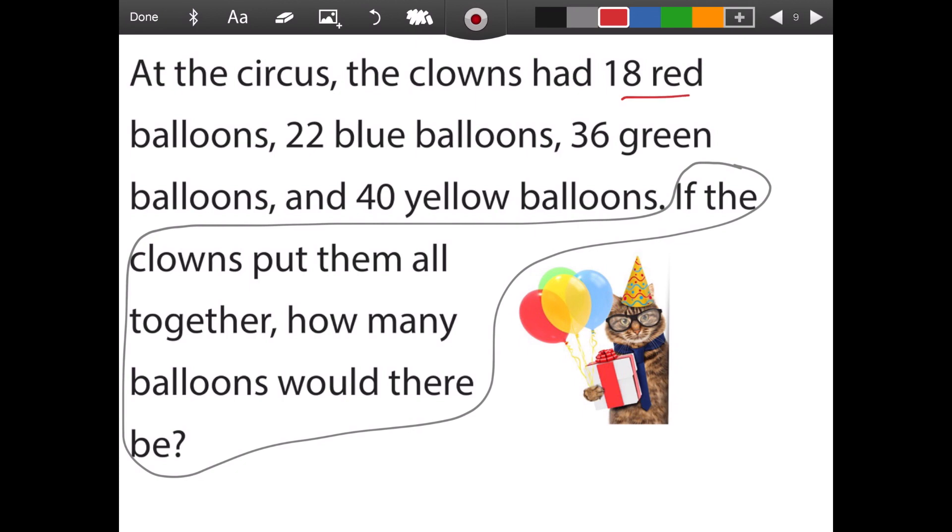And so the clowns have 18 red balloons, they have 22 blue balloons, 36 green balloons and 40 yellow balloons. So I want to add all of these together to figure out how many balloons there will be, which means I have four addends. Oh no, what should I do?